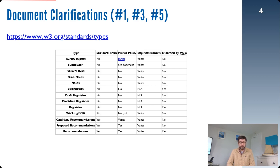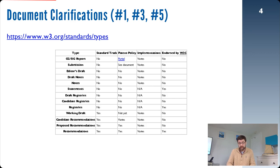We made a lot of document clarifications among those different projects. There is a page slash standard slash tabs where all of the types of documents we are manipulating are discussed. Before, all we had was a process page talking about the recommendation track and some community group pages. We didn't have a single place for that. At the top of that document, there is a summary table telling you, depending on the type of document, different assumptions you can make — such as: is it on the standard track at W3C? Is it under the patent policy? Do you have royalty-free licensing? What's the level of implementations? And which ones are actually endorsed by the W3C?